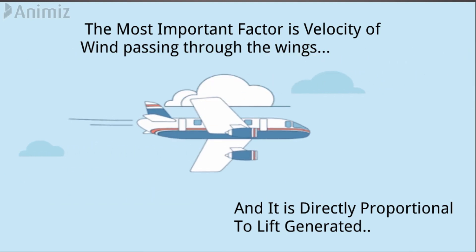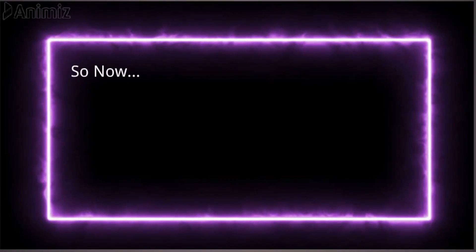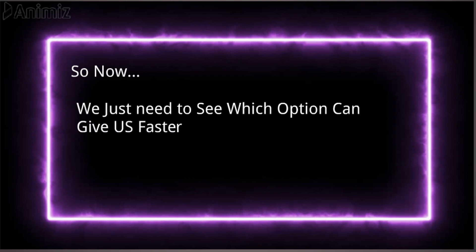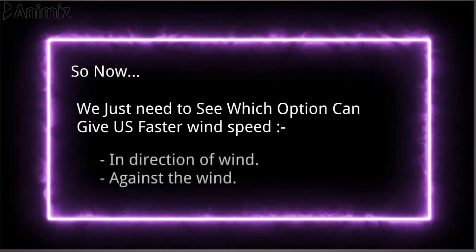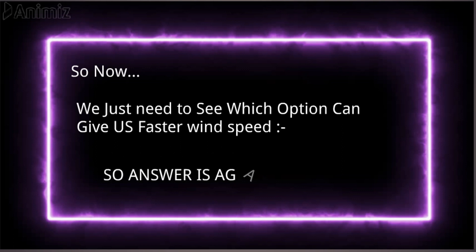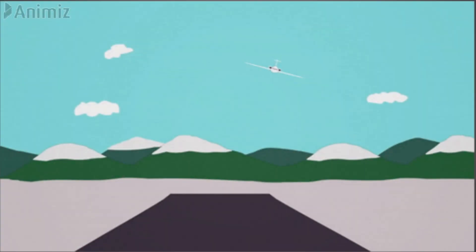That was a basic explanation of the mechanism of take off. Now let's get back to our question. We need to see which of the two cases — taking off in the direction of wind, or in the opposite direction — gives us more velocity of wind through the wings. It is obvious that if we move against the wind, the wind will also pass us with more velocity. So that is the reason why aircraft take off against the wind.